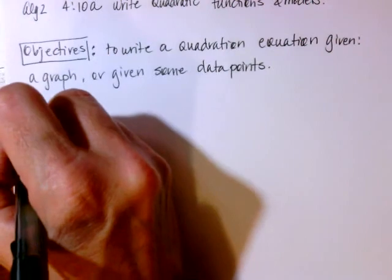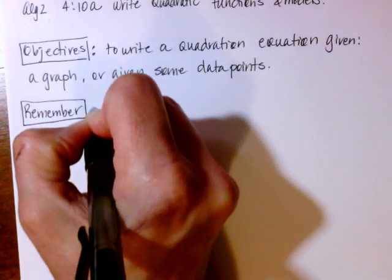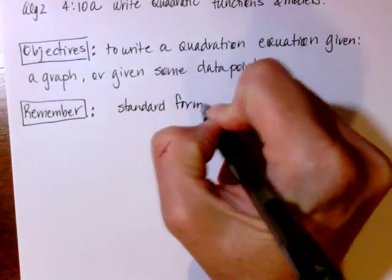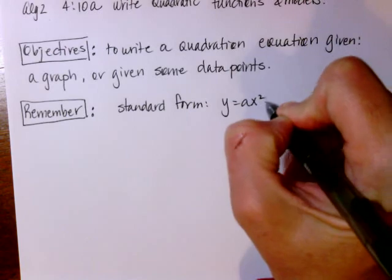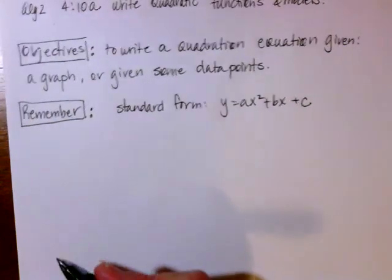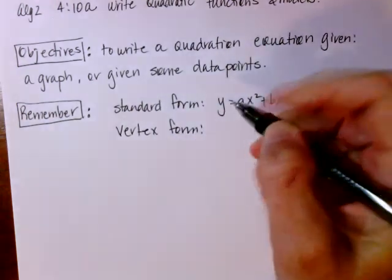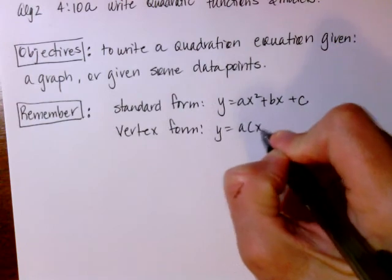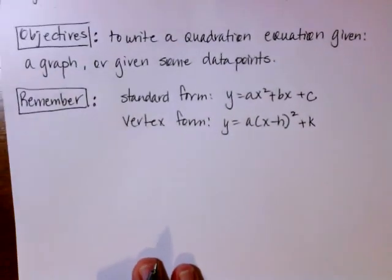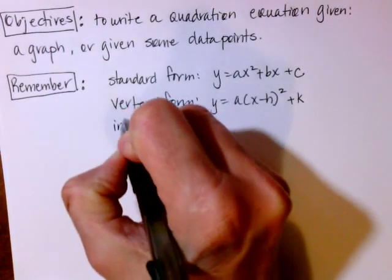Before we get started, I would like you to remember the different forms for our quadratic equations. Standard form is y equals ax squared plus bx plus c. That's our standard form. The next one we learned was vertex form.